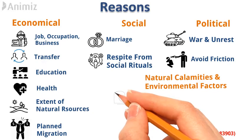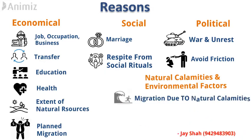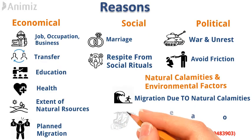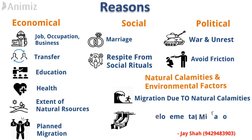The last point is natural calamities and environmental factors. Whenever there is any kind of natural calamity affecting a particular region, people have to migrate on a mass scale — for example, volcanic eruption, tsunami, earthquake, or flood. Apart from that, in some cases, whenever developmental activity is taking place, people also have to migrate on a large scale. For example, when the construction of Sardar Sarovar Dam was taking place, many people had to migrate from their villages to other places due to those developmental activities.